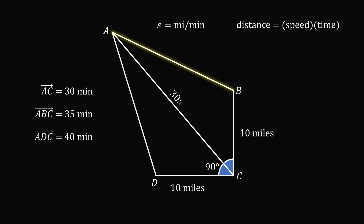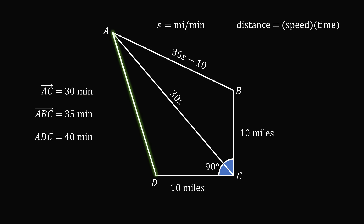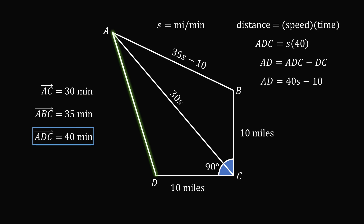Now let's figure out the length of AB. We don't directly know the time from A to B, but we know it takes 35 minutes from A to B to C. So ABC equals S times 35, and AB equals 35S minus 10. Similarly, ADC takes 40 minutes, so ADC equals 40S, and AD equals 40S minus 10.